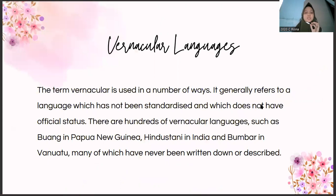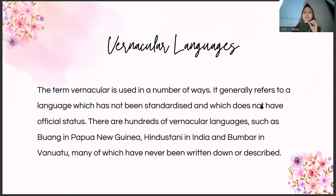The first material is about vernacular languages. The term vernacular is used in a number of ways. It generally refers to a language which has not been standardised and which doesn't have an obvious status. There are hundreds of vernacular languages such as Buang in Papua New Guinea, Hindustani in India, and Bumbara in Vanuatu, many of which have never been written, known, or described. In a multilingual speech community, the many different ethnic or tribal languages used by different groups are referred to as vernacular languages. Vernaculars are usually the first languages learned by people in multilingual communities and they are often used for a relatively narrow range of informal functions.